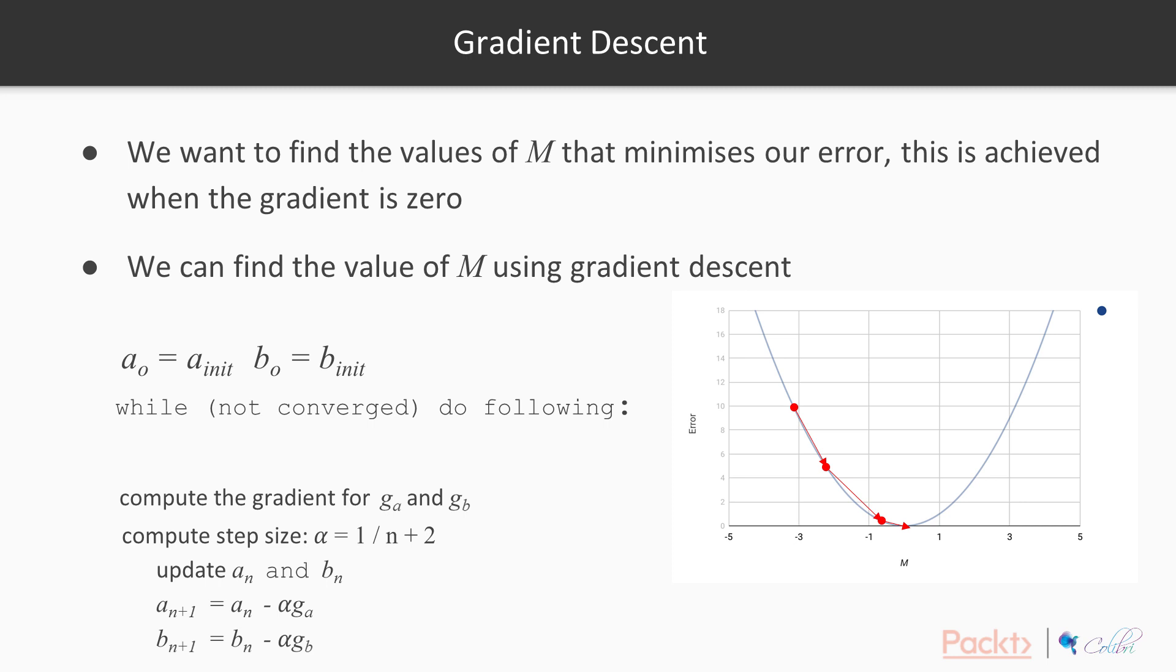So what is gradient descent? Basically, gradient descent is a way of finding the minimum of a function. So rather than trying to rearrange the equation and where it's zero, we'll start with an initial value, a init. And then while it's not converged, we are going to compute the gradients for ga and gb at this current value, at the current value of a and b,